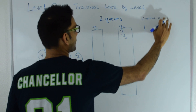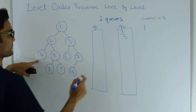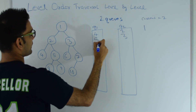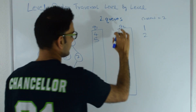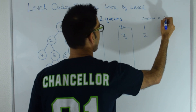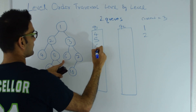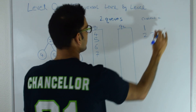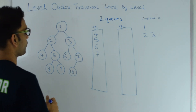So now I'm looking in q2. I pop from q2 so current becomes 2. 2 has a left child so that goes in q1, 2 has a right child so that goes in q1, and then I print 2. Now q2 is still not empty so my current becomes 3. 3 has left child 6 and right child 7 and I print 3. Now my q2 is empty so I put a new line here and go back to q1.